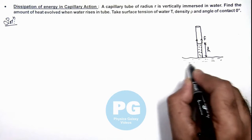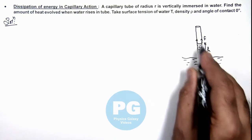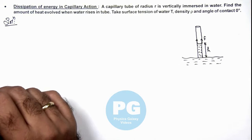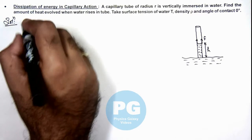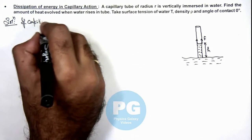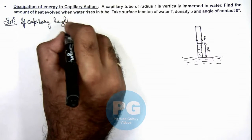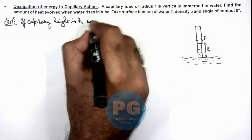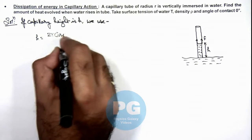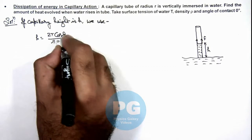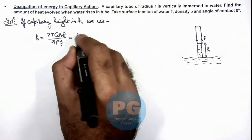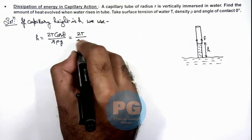In this situation, when the liquid is lifted to a level where the force balances its weight, the capillary height will not rise beyond that level. We already studied that capillary height h is equal to 2T cosθ divided by rρg. Since θ is given as zero degrees, we can write h as 2T divided by rρg.